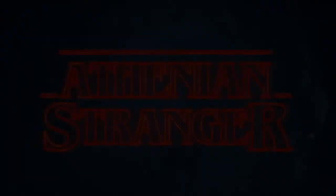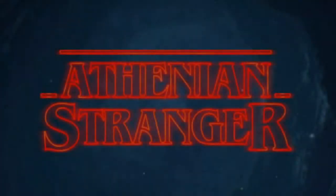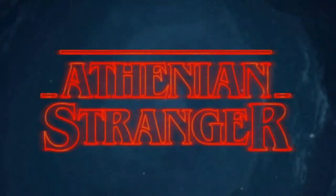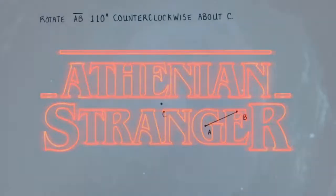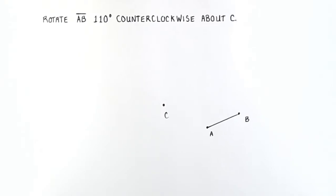Welcome back to this Athenian Stranger tutorial video, where today we are going to learn how to rotate a line segment about a fixed point. In this example, we're asked to rotate line segment AB 110 degrees counterclockwise about point C.